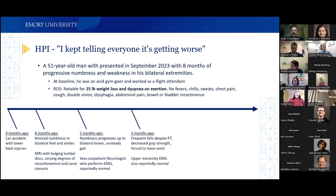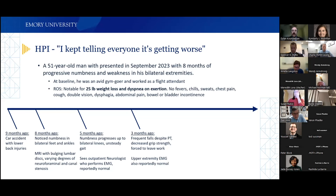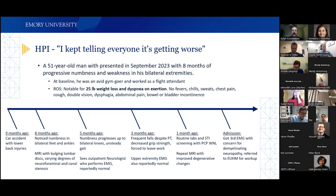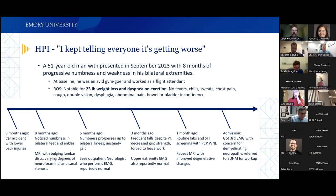His symptoms continued to progress despite several courses of physical therapy, and he was developing decreased grip strength and falling, forcing him to take a leave of absence from his job. A repeat upper extremity EMG over the summer was also reportedly normal. Approximately one month prior to presentation, his primary care physician did routine blood work and STI screening, all reportedly within normal limits. A repeat MRI of his lumbar and thoracic spine showed generally improved degenerative changes. A third EMG was concerning for demyelinating neuropathy, and he was immediately referred to the EUHM emergency room.